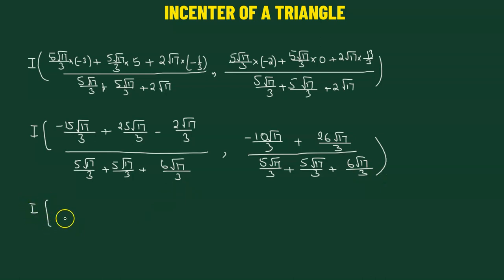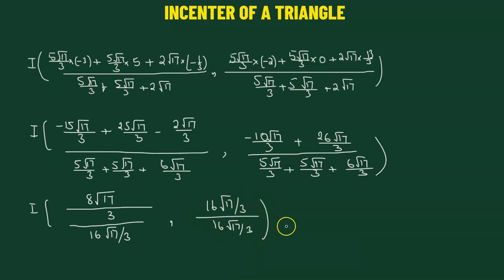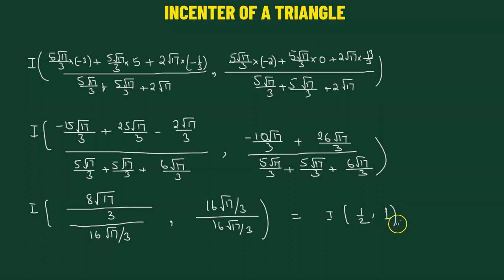The x-coordinate simplifies to 8 root 17 over 3 divided by 16 root 17 over 3, which equals 1 over 2. The y-coordinate gives 16 root 17 over 3 divided by 16 root 17 over 3, which equals 1. So the coordinates of the incenter of the triangle are one half, 1. This is the final answer.